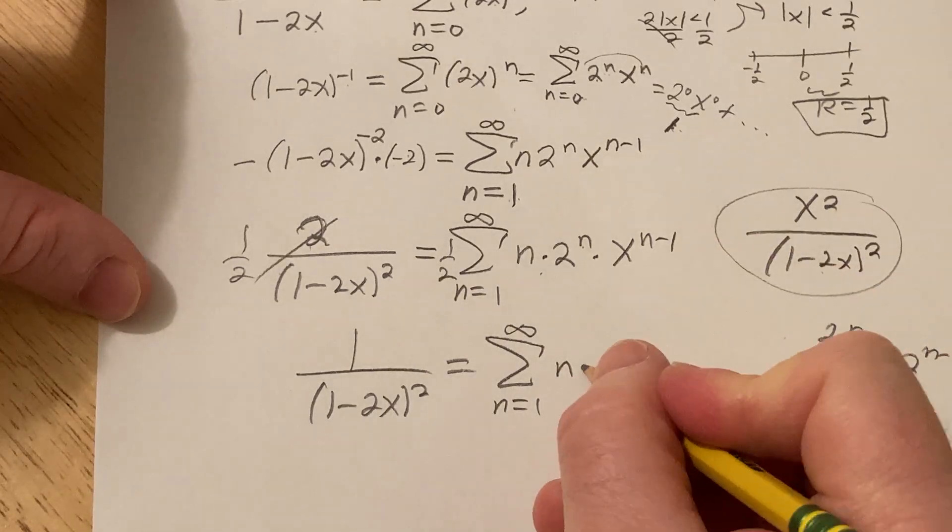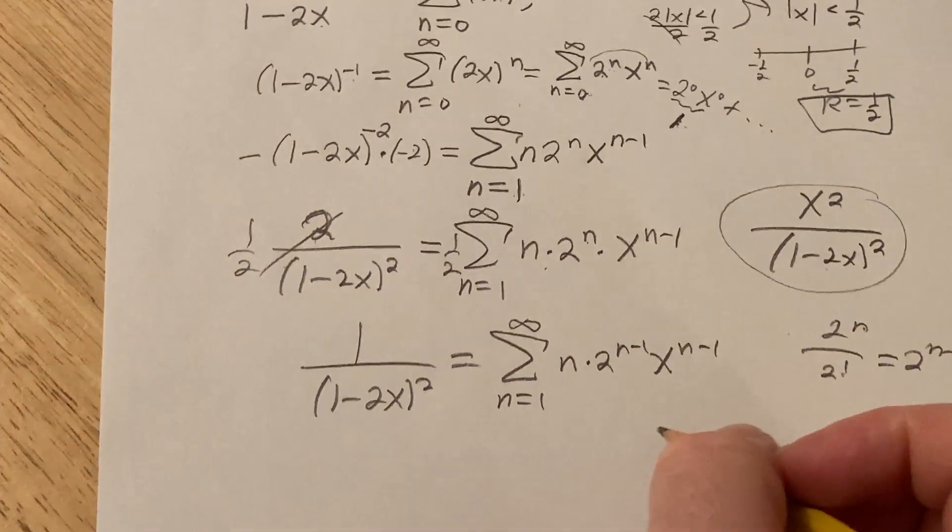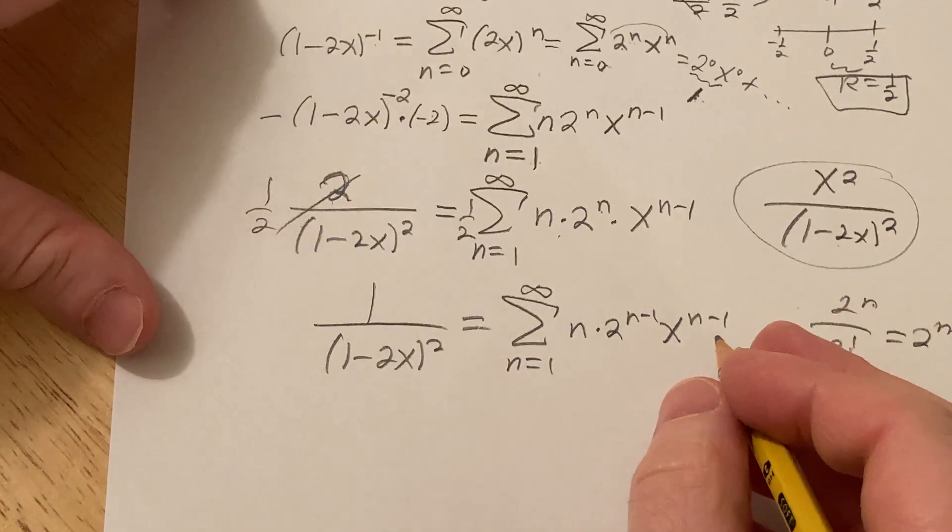So it's times 2 to the n minus 1 x to the... Oh, look how they match. Isn't that cool? Math can be really fun.